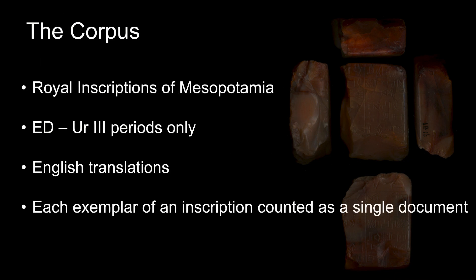The selection of inscriptions used in this study is restricted to the inscriptions from the early dynastic through to the Ur III periods, roughly 2700 to 2004 BCE, as digitizing this material is very time consuming. As topic modeling works best with large amounts of data, it's my intention to return to this study at a later date and incorporate all known royal inscriptions. Unfortunately, it was necessary to use English translations instead of the original language, because the topic modeling package used to analyze the data has some built-in functions that could only be taken advantage of with an English language corpus.